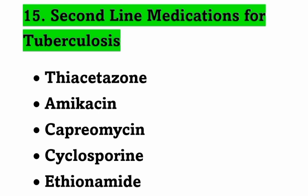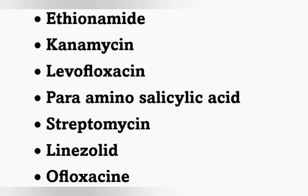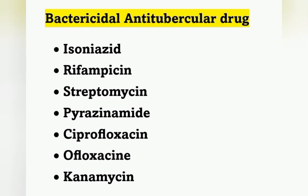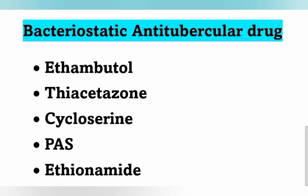Second-line medications include Thiacetazone, Amikacin, Capreomycin, Cycloserine, Ethionamide, Kanamycin, Levofloxacin, Para-aminosalicylic acid, Streptomycin, Linezolid, and Ofloxacin. Bactericidal anti-tubercular drugs include Isoniazid, Rifampicin, Streptomycin, Pyrazinamide, Ciprofloxacin, Ofloxacin, and Kanamycin.